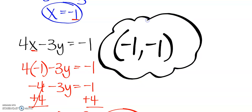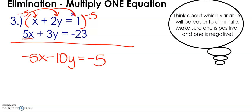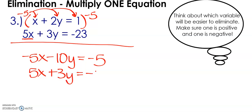One more example. Looking at our coefficients, we have a 2 and a 3 on x, so we would have to multiply both equations to adjust. Looking at the top equation, I could multiply by negative 5. Distributing that negative 5 would allow us to eliminate x. So we get negative 5x minus 10y equals negative 5. Remember to distribute that negative 5 to every term. The second equation does not change — it is still 5x plus 3y equals negative 23.